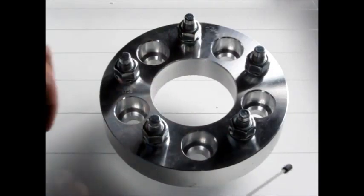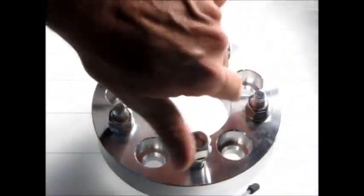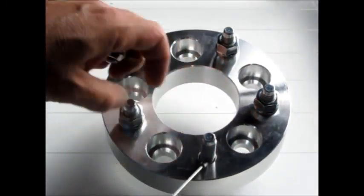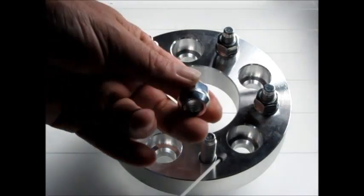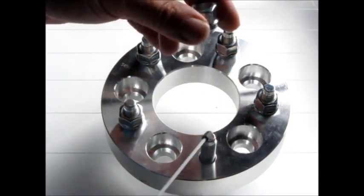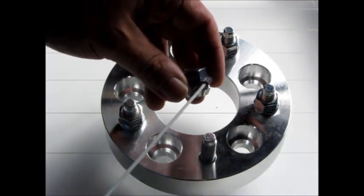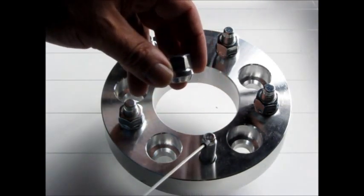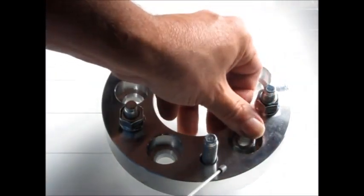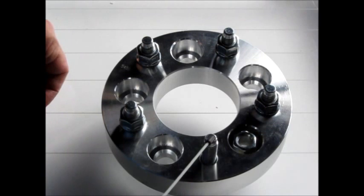Now I'm going to talk about lug nuts. These lug nuts on this adapter, my adapter, the listing will tell you what size the studs are. This particular stud is a 12 millimeter by 1.5. So these lug nuts that come with this adapter, if your vehicle has the same size stud sticking out on it, you can use these lug nuts to attach this adapter to your vehicle.